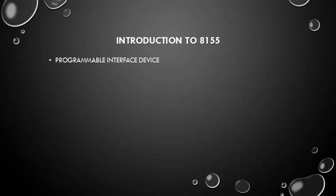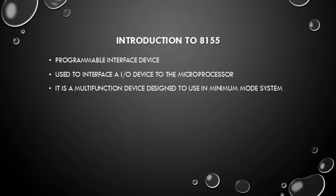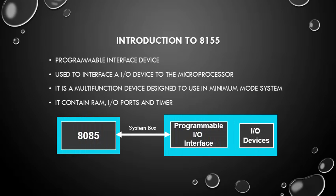Introduction to 8155: it is a programmable interface device used to interface input/output devices to the microprocessor. It is a multi-function device designed for use in minimum mode systems. It contains RAM, input/output ports, and a timer. You can see the flow diagram of 8155 with 8085.